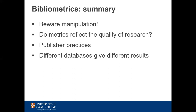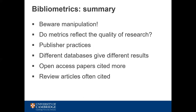Remember that different databases give different results — the content indexed in one citation database varies from another, so the citations will differ too. Be aware that open access papers are cited more, as there's no barrier to access via subscription. Review articles are often cited rather than the primary research. These traditional metrics don't take into account influence outside of research — they are supposed to show the impact of quality within academia.